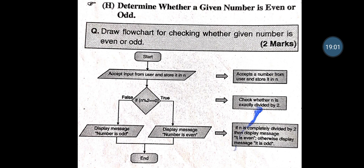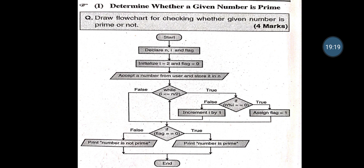Whether a Given Number is Even or Odd — Start, Accept input N. If N divided by 2 equals 0, then it is Even; if false, then the number is Odd. Whether a Given Number is Prime — Start, Declare variables N, I and Flag. Initialize I = 2 and Flag = 0. Accept number from user. While I <= N / 2 — if N / I equals 0, set Flag = 1; else increment I by 1. Then check: if Flag = 0, then the number is Prime; otherwise the number is Not Prime.